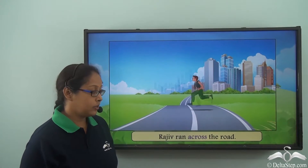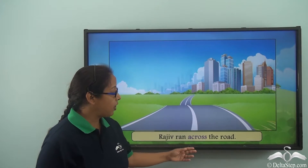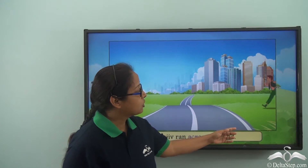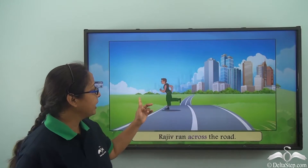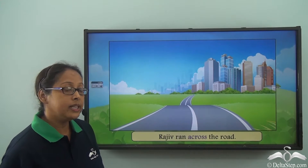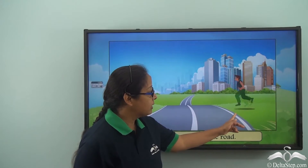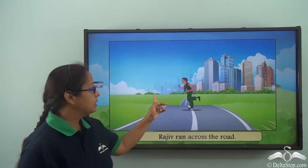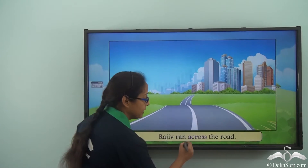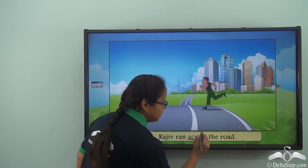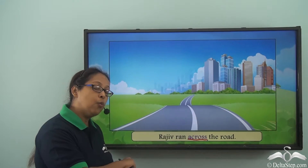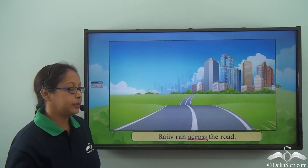Let's take another example: Rajiv ran across the road. If you see this picture, Rajiv is running from one side to the other side of the road. That is exactly what this preposition means — 'across', to cross over from one side to the other side.